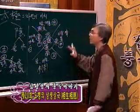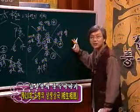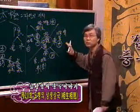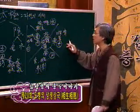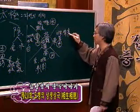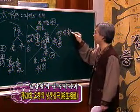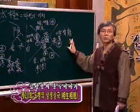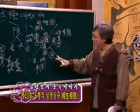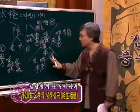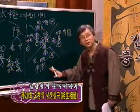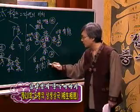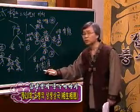동물로 들어가 봅니다. 상징적인 동물을 오행에다가도 배속시켜 놨습니다. 동쪽에는 용을 집어 넣어놔서 청룡이라 하고, 남쪽에는 공작을 집어 넣어놔서 주작이 됩니다.